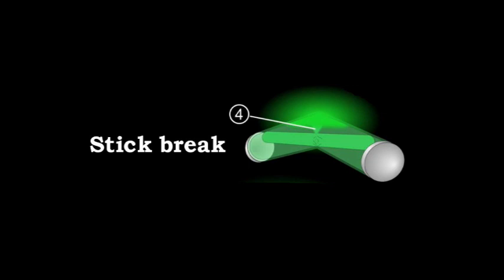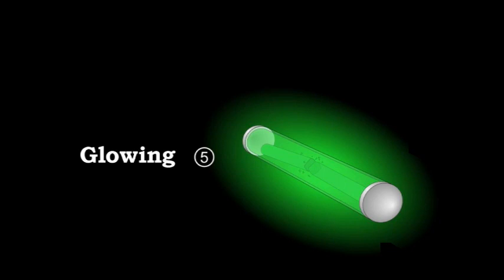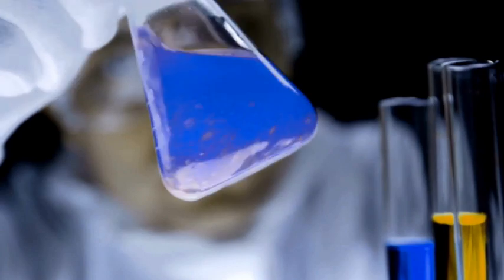When you break or bend a glow stick, the vial inside is broken, letting the activator mix with the rest of the solution. As a result, a chemical reaction occurs, causing the electrons in the solution to get excited, releasing energy in the form of light. That sounds familiar, doesn't it? That's right, it's the process of chemiluminescence.